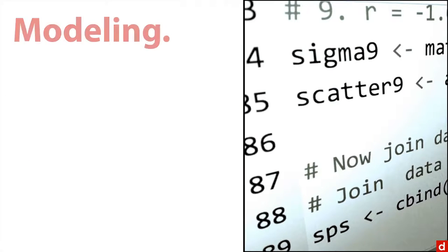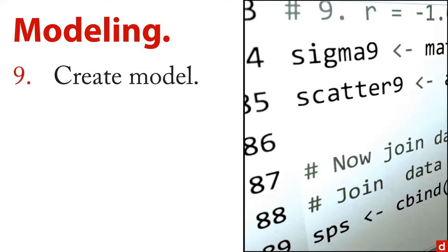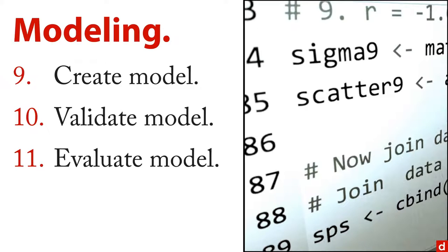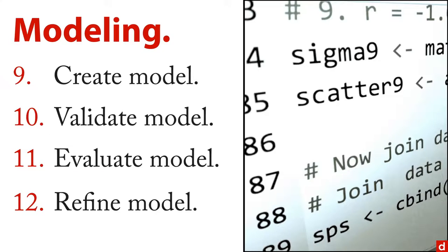The third group is modeling, or statistical modeling. This is where you actually create the statistical model — for instance, you might do a regression analysis or a neural network. Once you create your model, you have to validate it, perhaps with a holdout validation or a small replication if you can. You also need to evaluate the model: once you know it's accurate, what does it actually mean and how much does it tell you? And then finally, you need to refine the model — there may be variables to throw out or additional ones to include, you may want to transform some of the data to make it easier to interpret and apply.